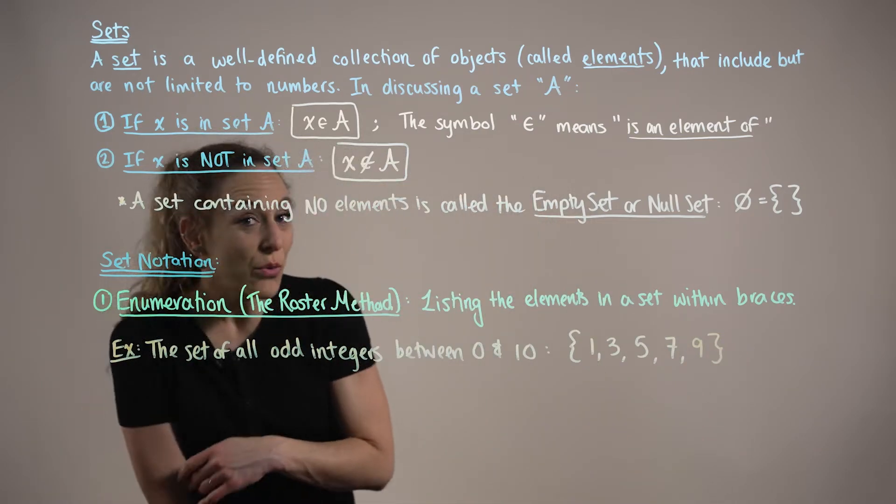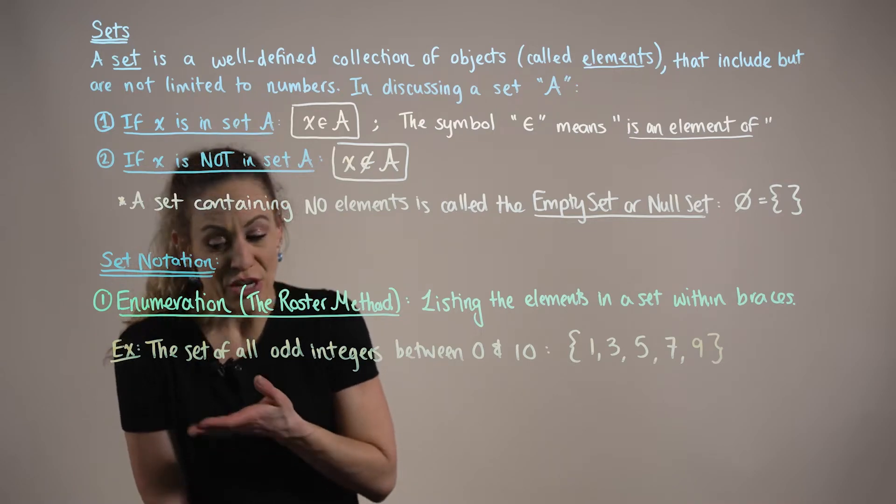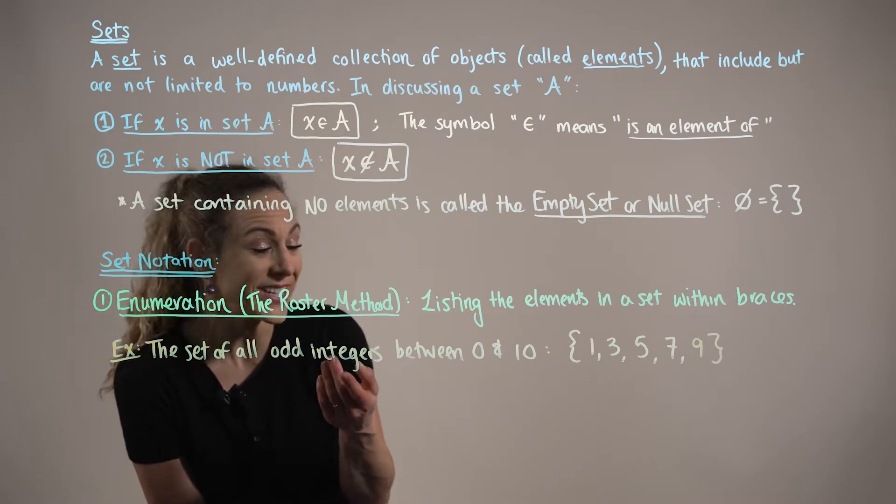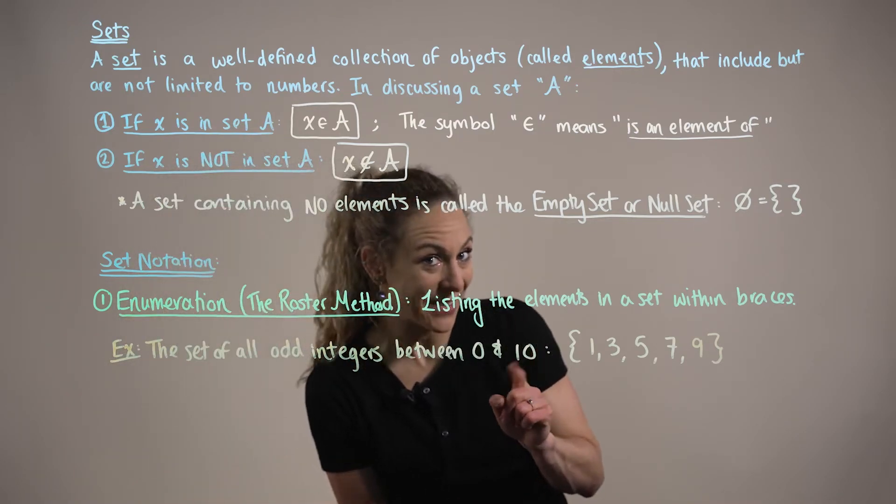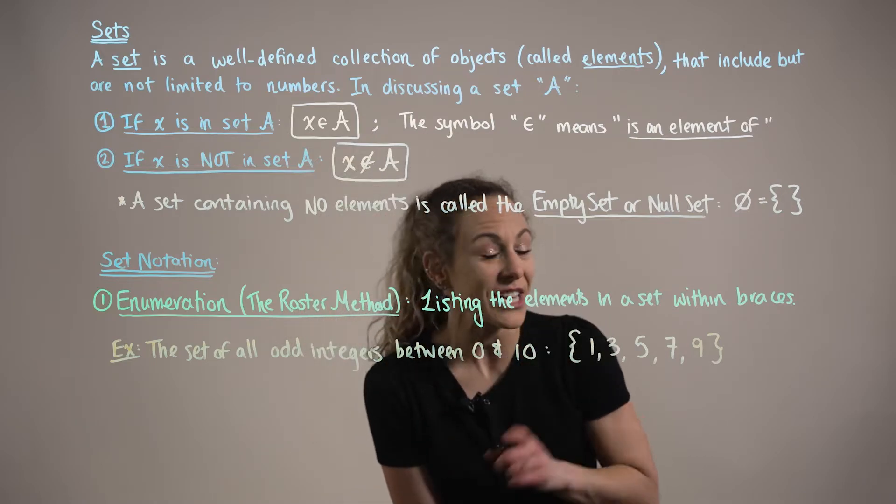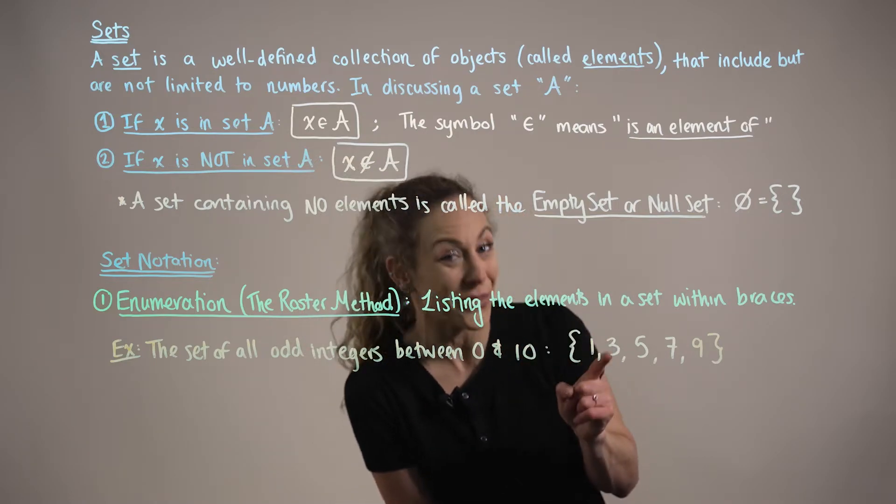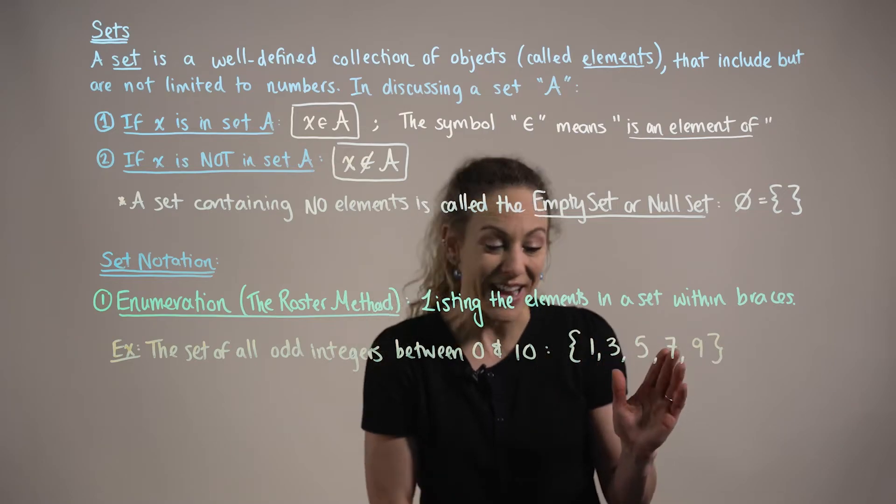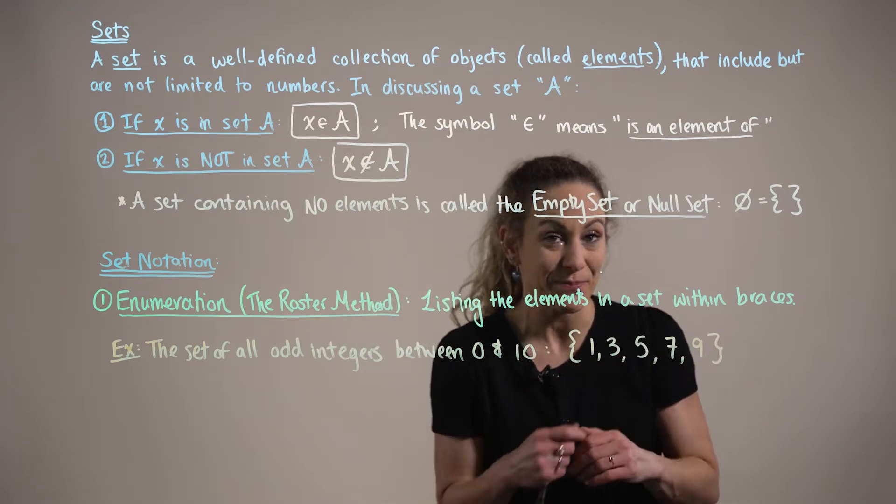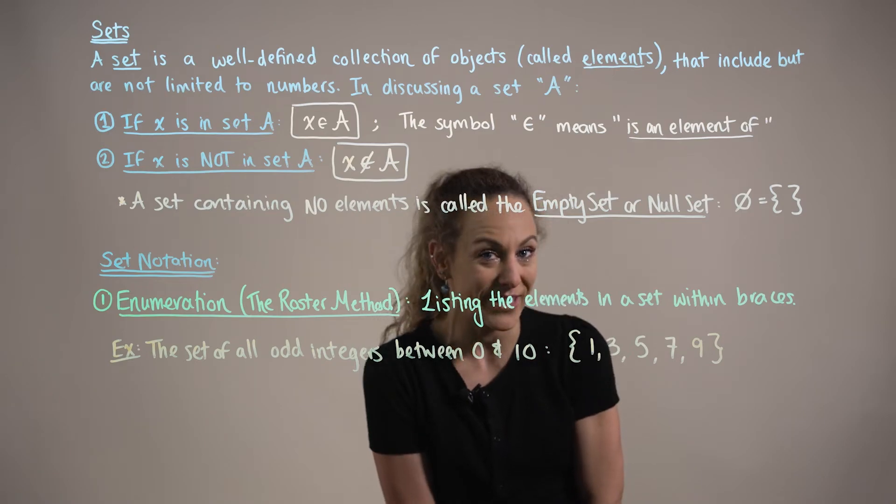In this example, we are using the roster method to define the set of all odd integers between 0 and 10. So notice we have the odd integers 1, 3, 5, 7, and 9 between our braces. So this is enumeration or the roster method.